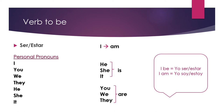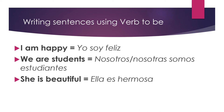Here are some examples of sentences using verb to be. 'I am happy' — yo soy feliz. 'We are students' — nosotros somos estudiantes. 'She is beautiful' — ella es hermosa.